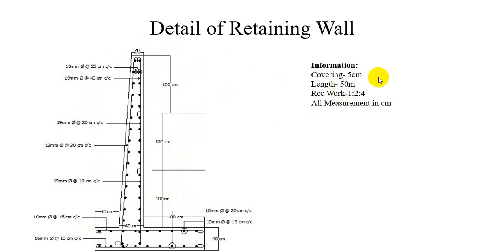Today we are using the same 5 cm cover, and the retaining wall total length is 50 meters. The RCC casting ratio is 1:2:4.